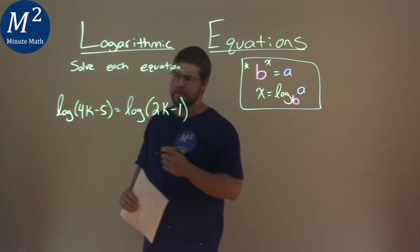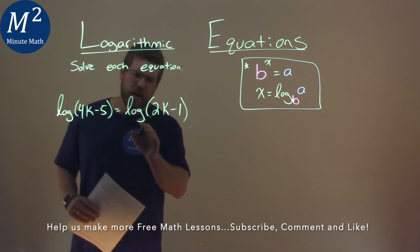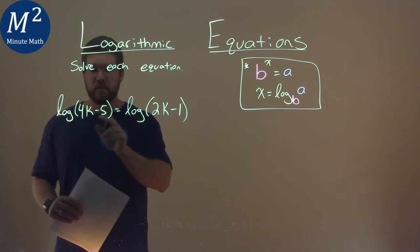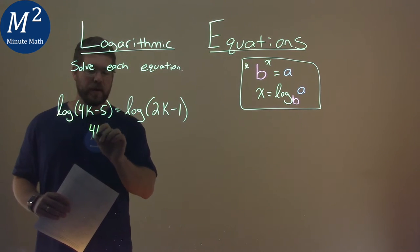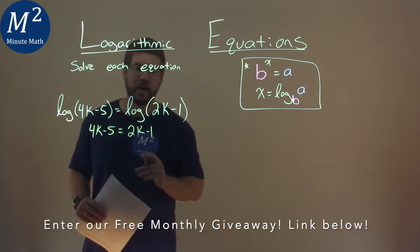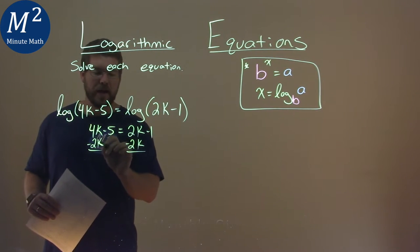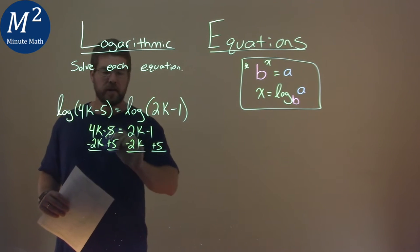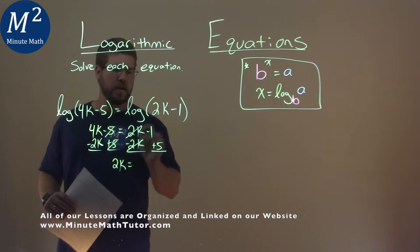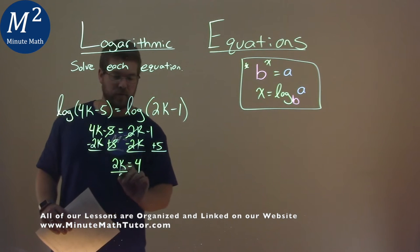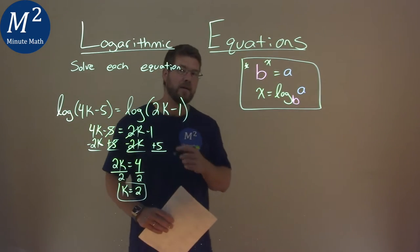We're given this problem: log of 4k minus 5 equals log of 2k minus 1, and we have to solve the equation. We have a log on both sides, both with the same base of 10. When that happens, we can set the insides equal to each other. So 4k minus 5 equals 2k minus 1, and we solve for k. Subtract 2k from both sides, and add 5 to both sides. These cancel, leaving 4k minus 2k, which is 2k. Negative 1 plus 5 is 4. Divide both sides by 2, and k equals 4 divided by 2, which is 2. My final answer is k equals 2.